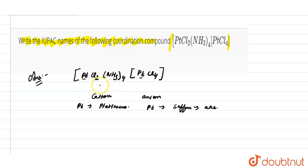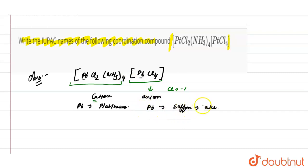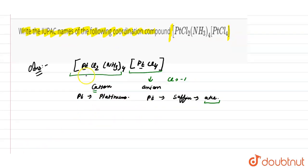NH₃ is a neutral ligand, making the first complex positively charged — so it is a cation. Chlorine has a minus one charge, making the second complex an anion, so platinum ends with '-ate' here. The name of the complex cation is written first, followed by the name of the complex anion.